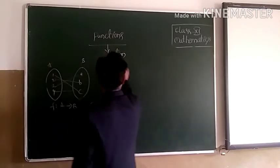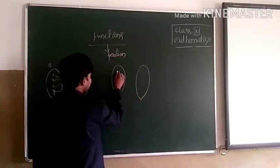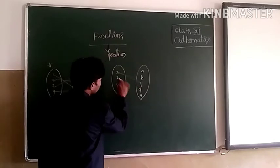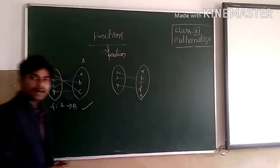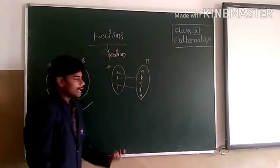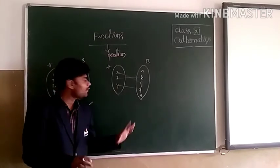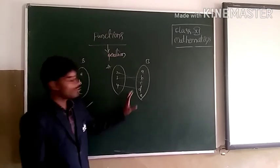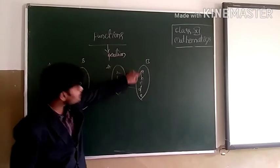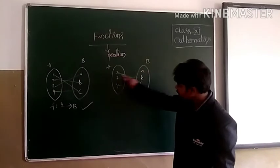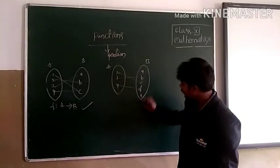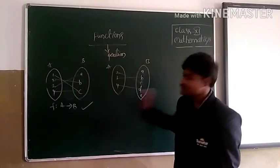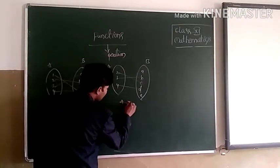Now another example. Set A = {2, 3, 4} and set B = {A, B, C, D, E}. Here 2 is mapped to C, 3 is mapped to B, and 4 is mapped to B. The definition of function says every element of A must have one and only one image in B. Each of 2, 3, and 4 has one image. We don't need to worry about elements of B like A and E that have no pre-image. So this is a function, f: A → B.